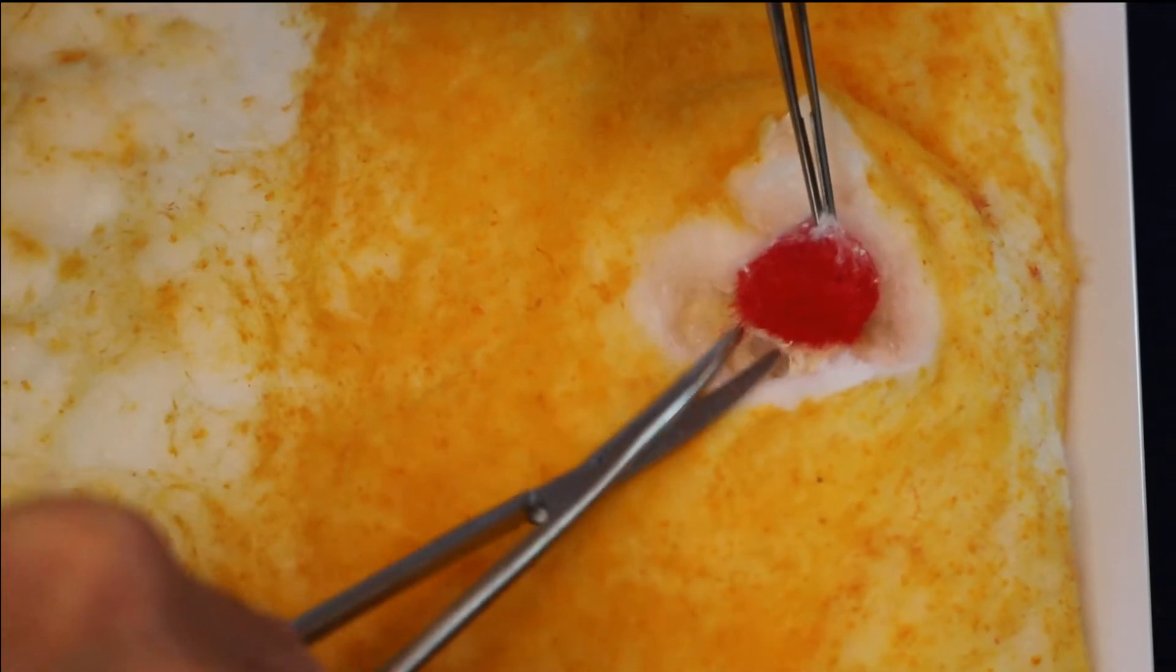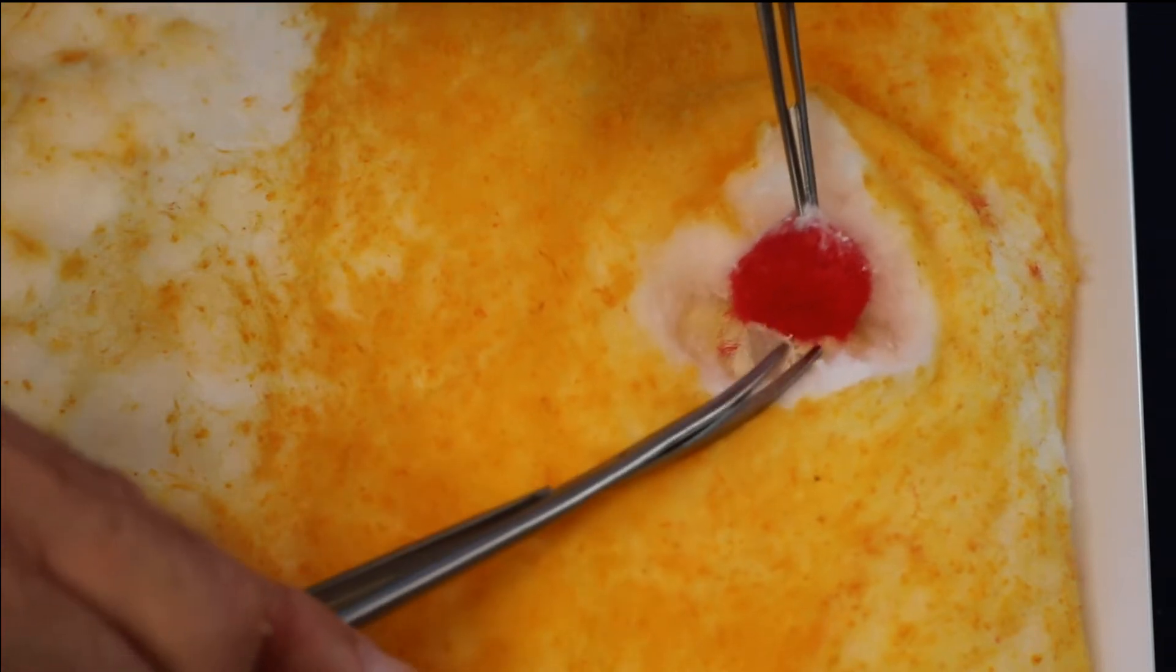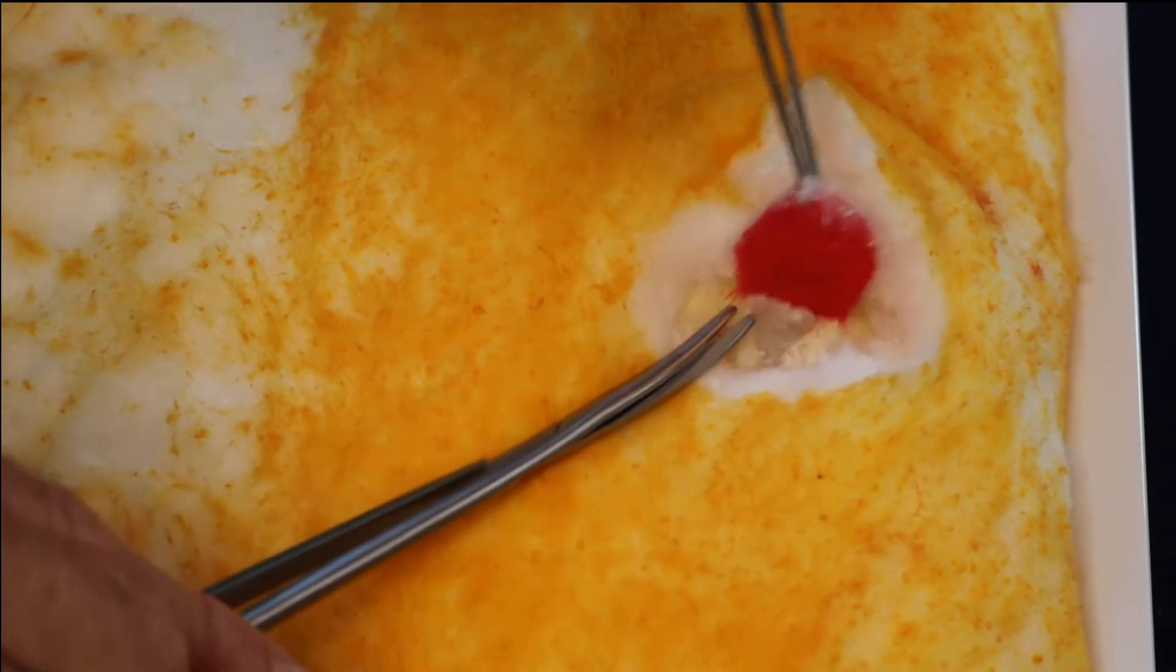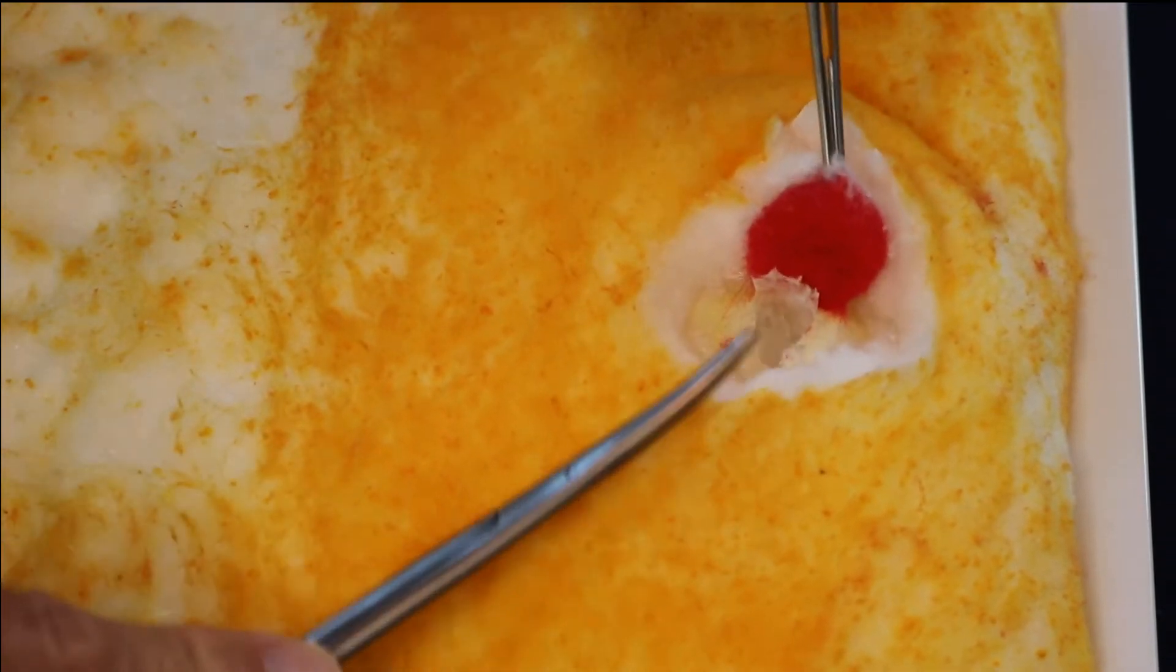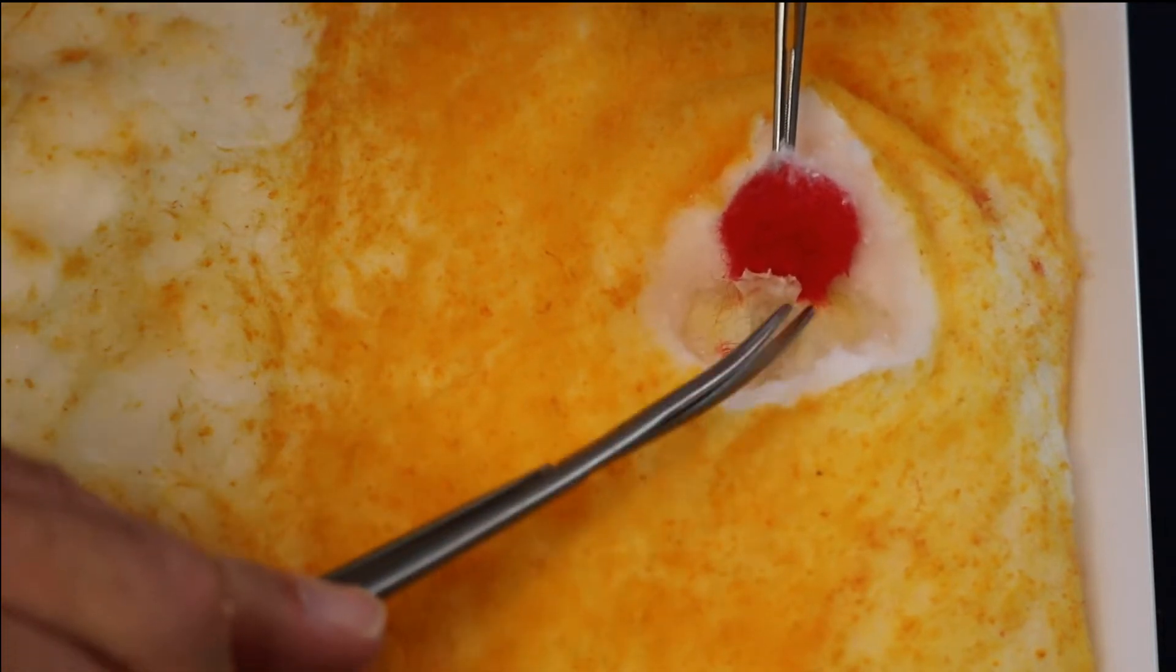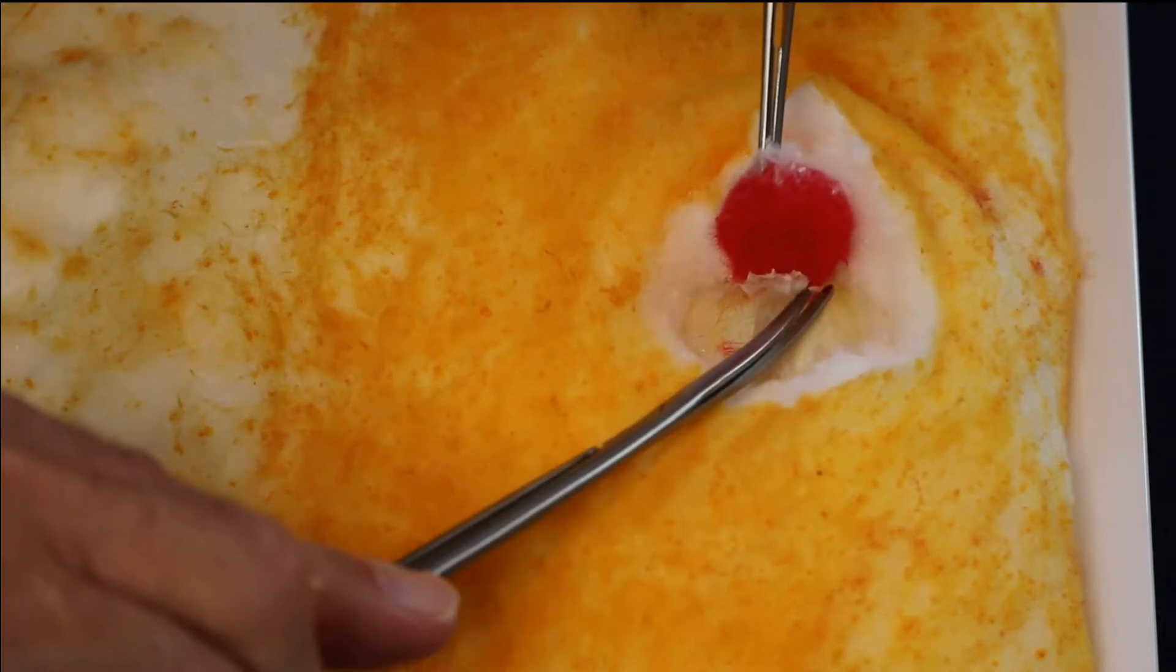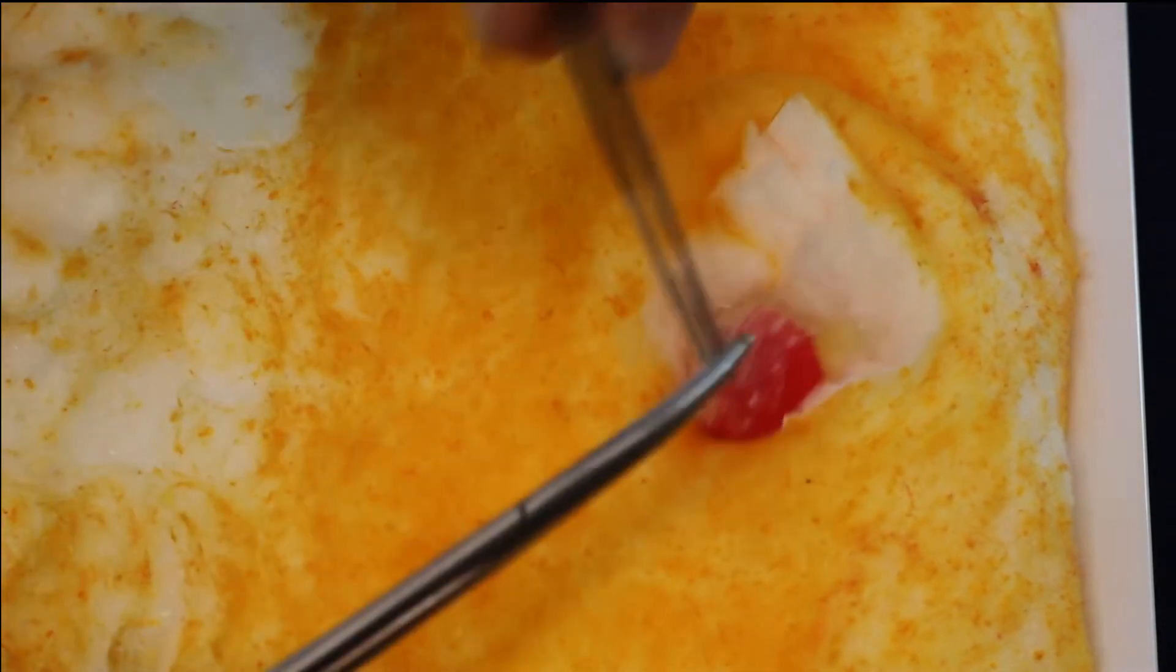A major part of your success in removing this mass will be the amount of tension you apply to the area to be dissected. Upward retraction is critical, particularly as you address the undersurface of the mass to be dissected. Again, try to maintain a plane as close as possible to the mass with the removal of as little surrounding tissue as possible.